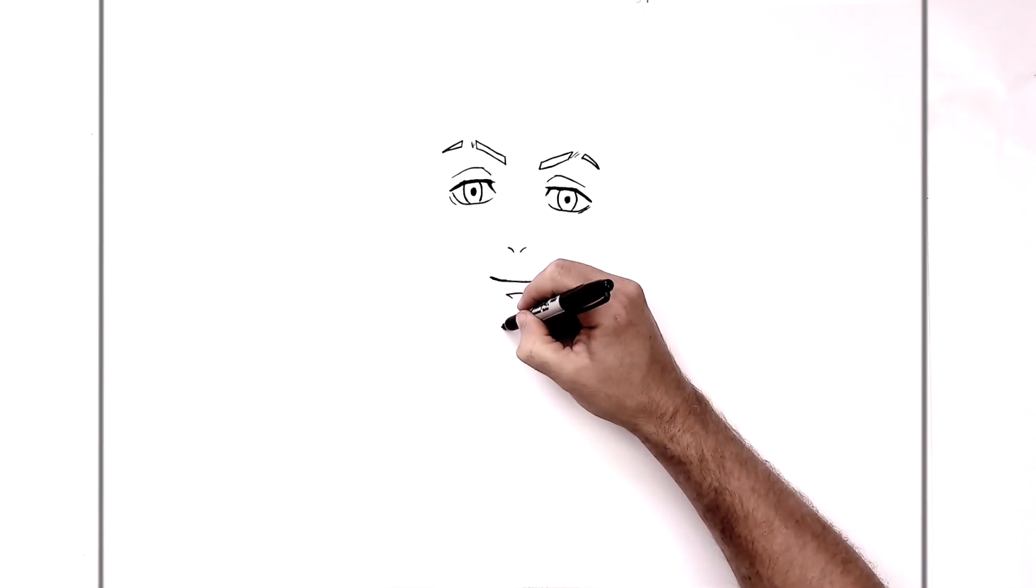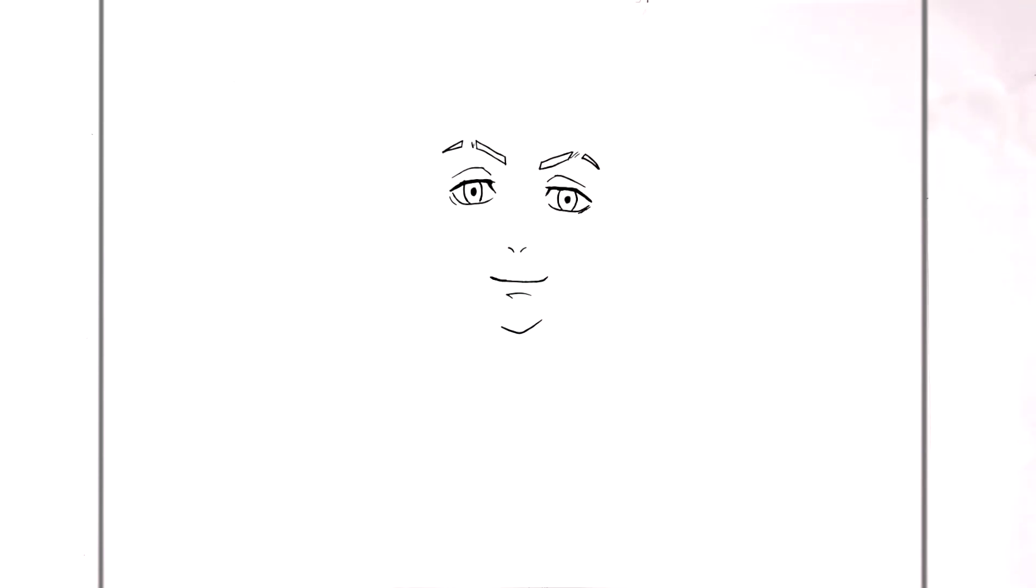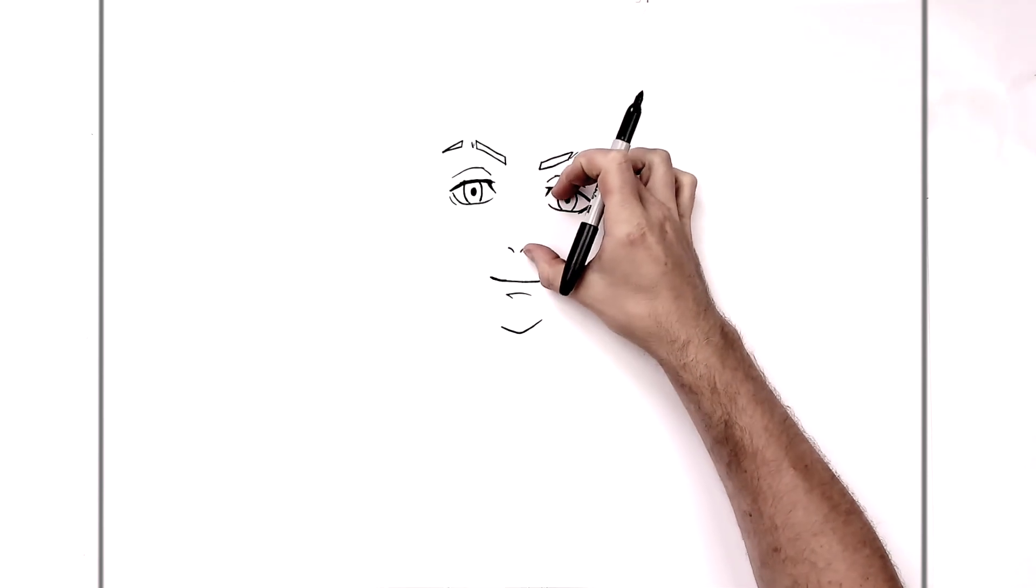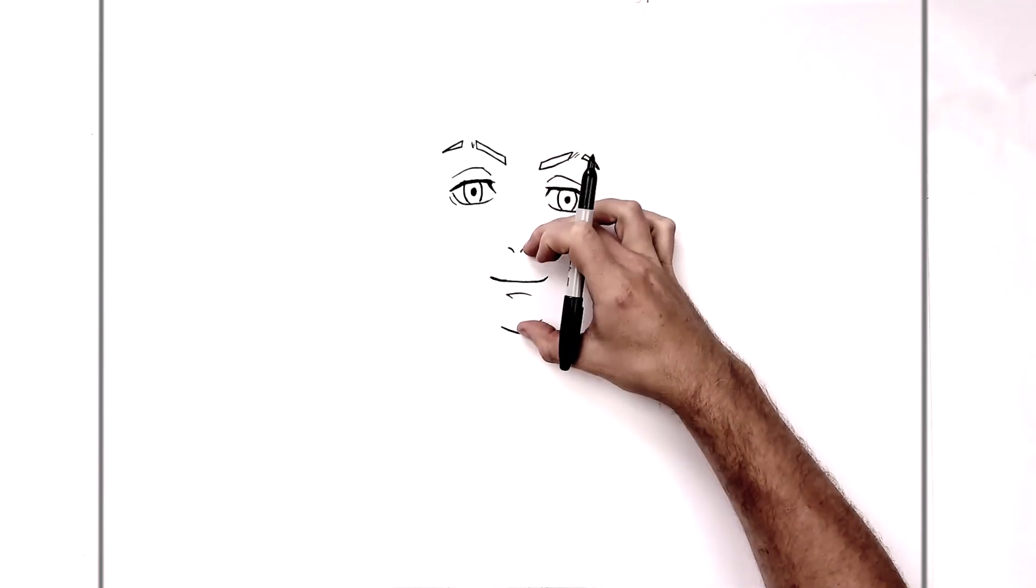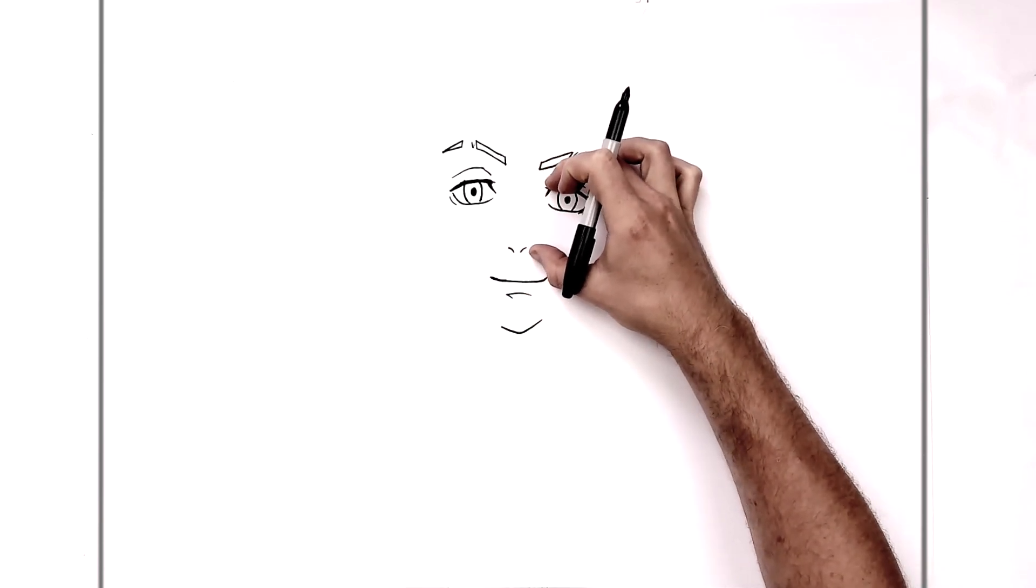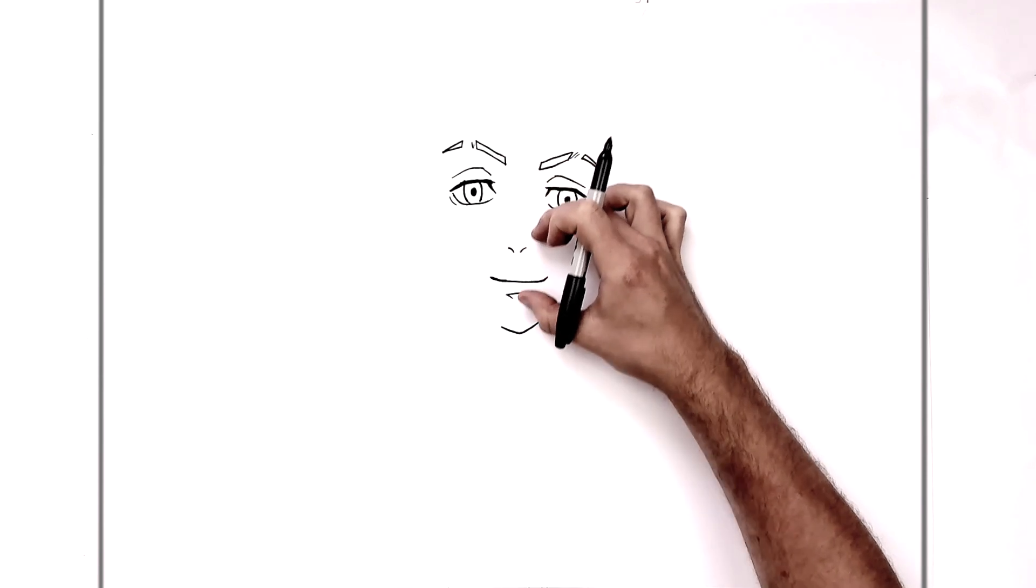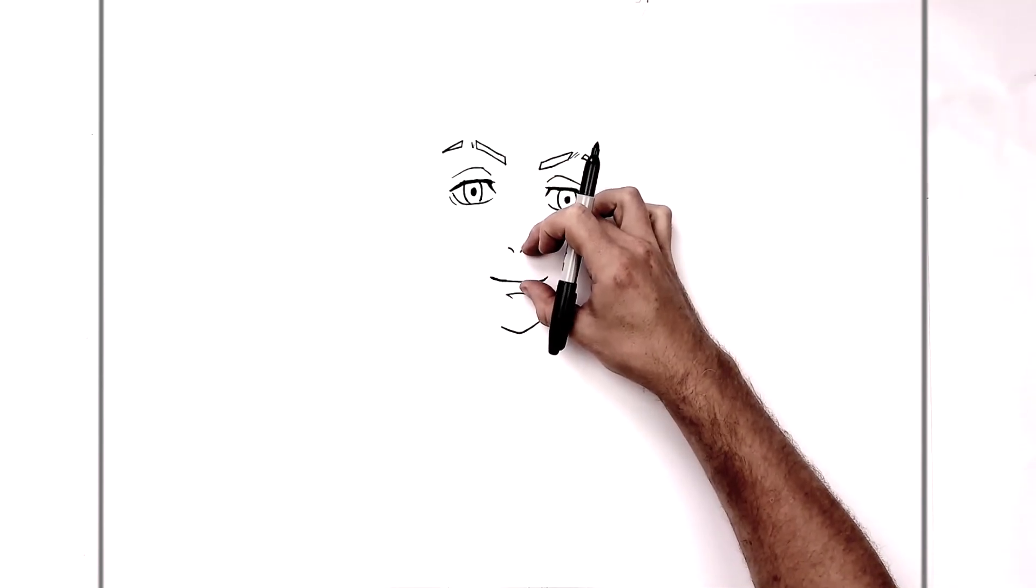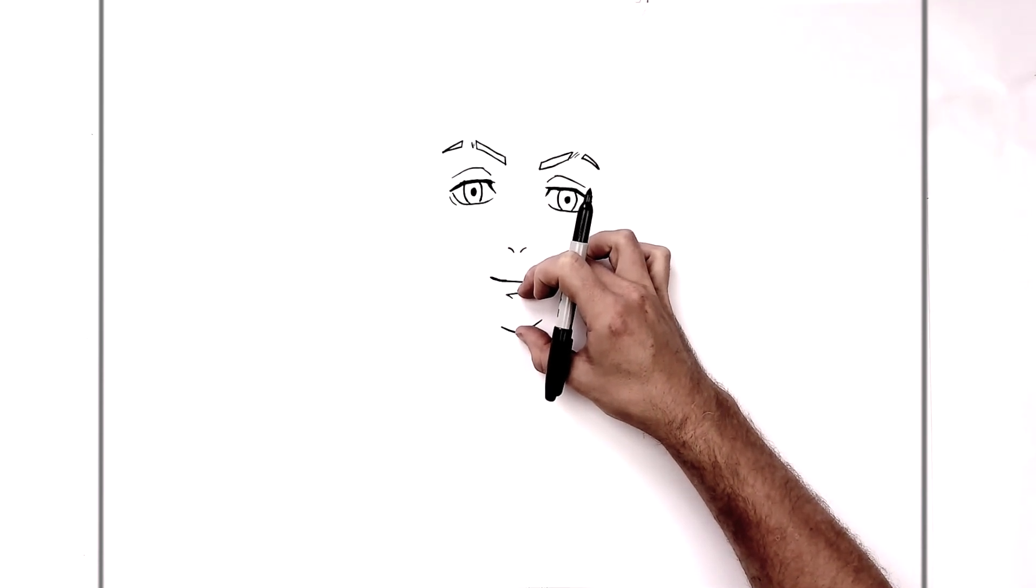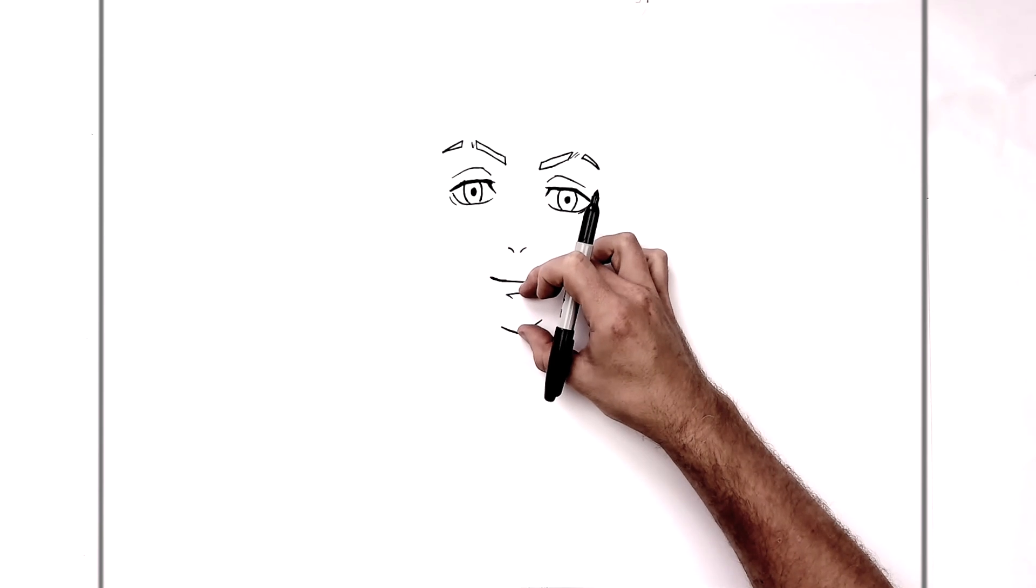And then his chin. Just there. So you can check sort of levels of things. Eye to nostrils is about the same as nostrils to chin. So here to here, about the same as here to here. So like top eyelid, here to here, about the same as there to there. And then nostrils to bottom lip, about the same as bottom lip to chin. So here to here, about the same as here to here.